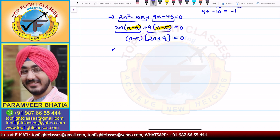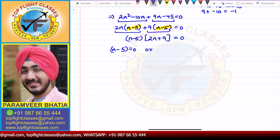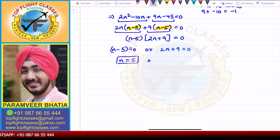From here, either N minus 5 = 0, giving N = 5, or 2N plus 9 = 0, giving N = minus 9 by 2.